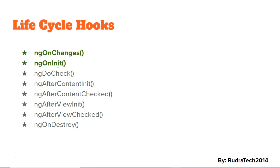Angular provides eight lifecycle hooks: ngOnChanges, ngOnInit, ngDoCheck, ngAfterContentInit, ngAfterContentChecked, ngAfterViewInit, ngAfterViewChecked, and ngOnDestroy. These lifecycle hooks are useful for performing certain actions at specific times in the lifecycle of a component or directive.